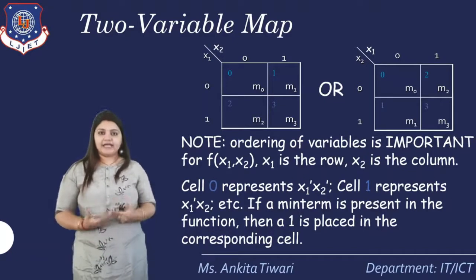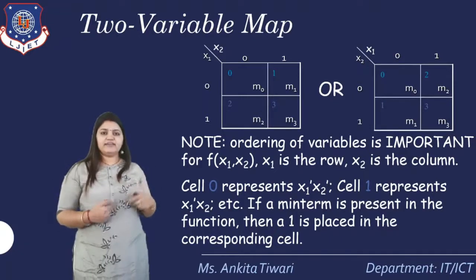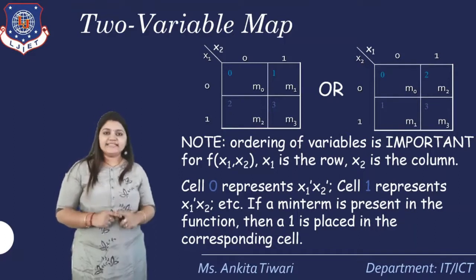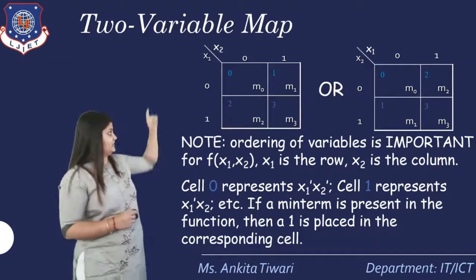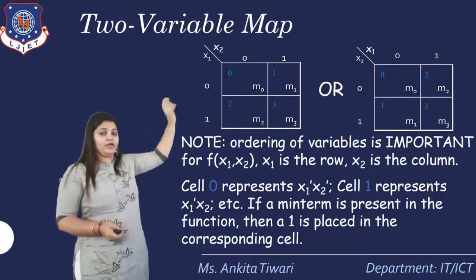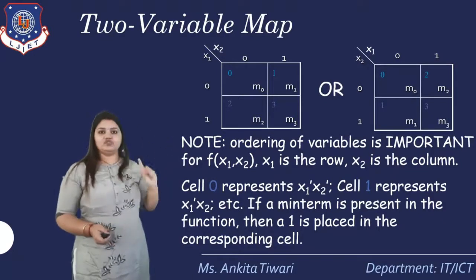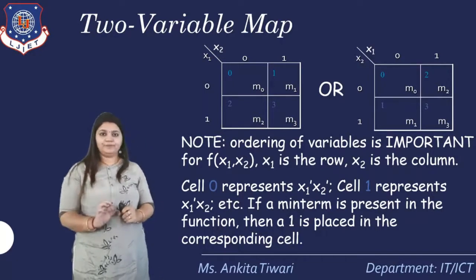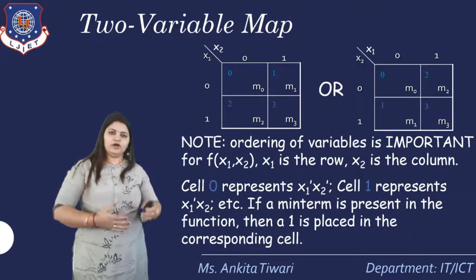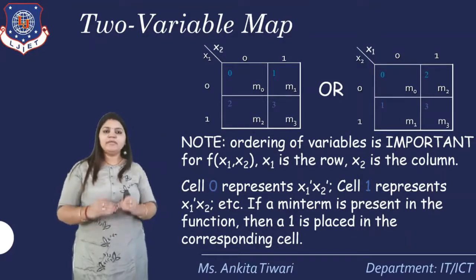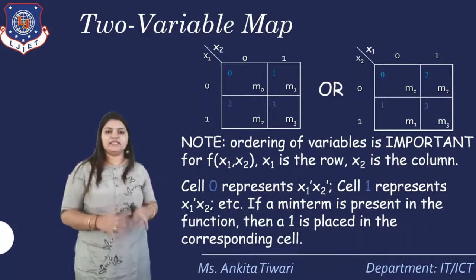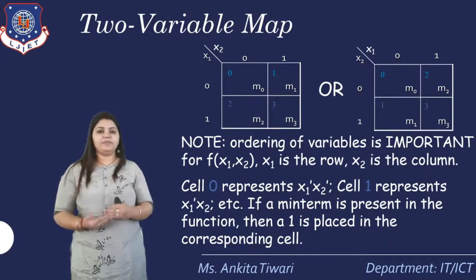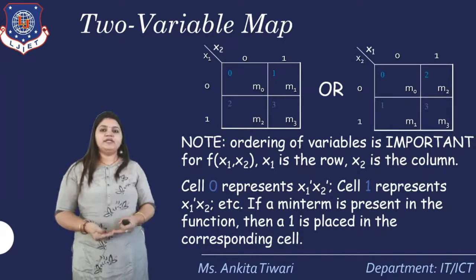If the ordering is not maintained, the answer will of course be wrong. Because if we reduce a Boolean function using Boolean laws, we should get the same answer as when reducing using K-Map — it should not change. So ordering of variables is very important for any function — for 2-variable, 3-variable, or any variable. X1 is the row and X2 is the column. Cell 0 represents X1 bar X2 bar, and cell 1 represents X1 bar X2.